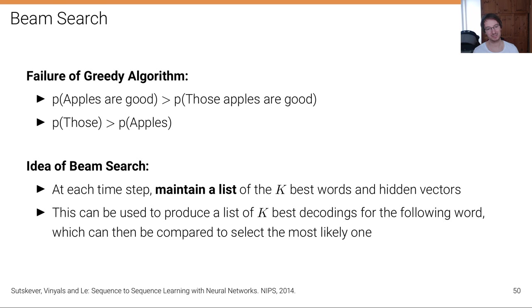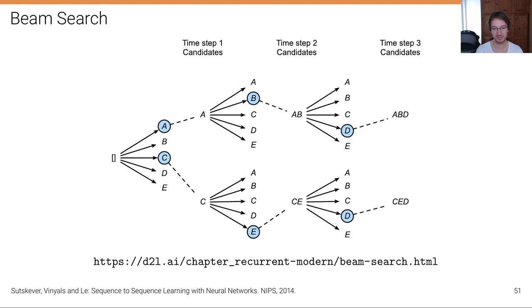Here's an illustration. We start with an empty sequence and have candidates a, b, c, d, e. With a beam of size two, a and c are most likely so we keep track of them. For a, b is most likely; for c, e is most likely, so we continue with 'ab' and 'ce.' It could also be that 'ab' and 'ac' are both more likely than 'ce,' in which case we continue with 'ab' and 'ac.'